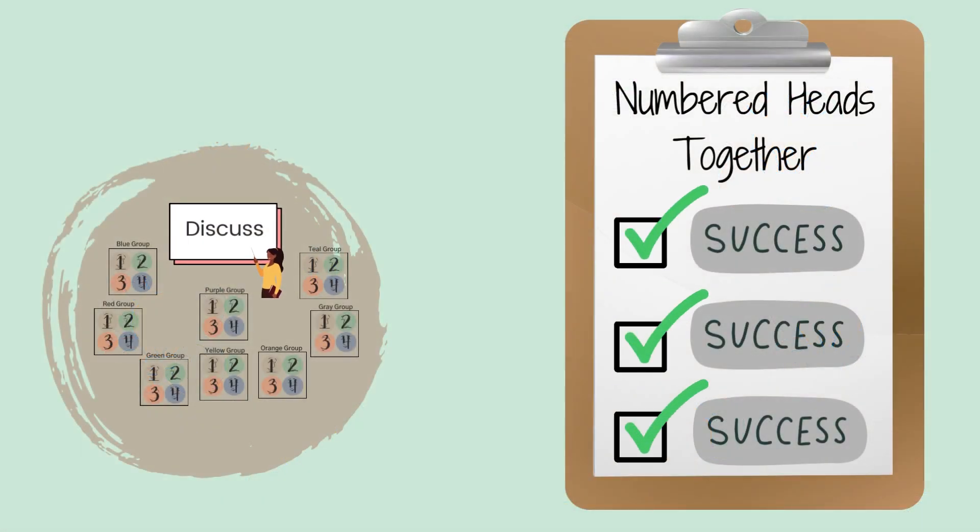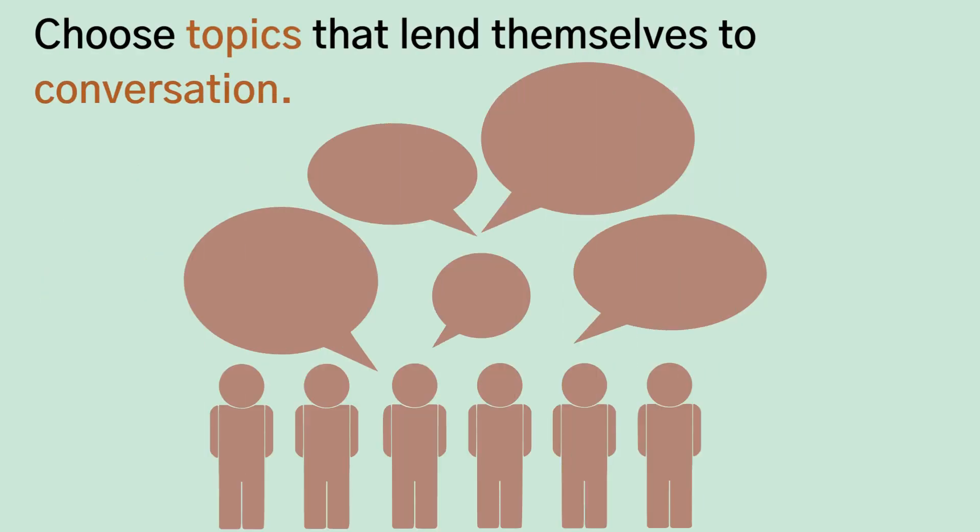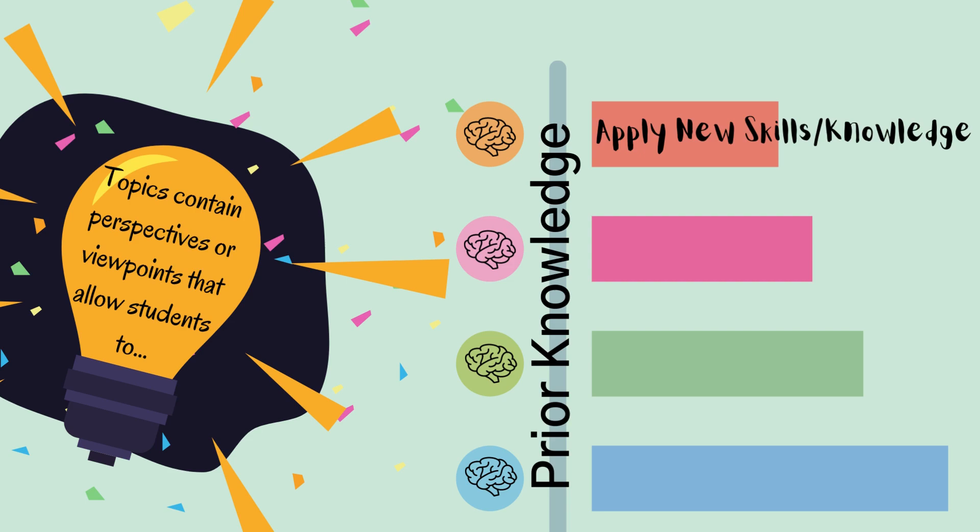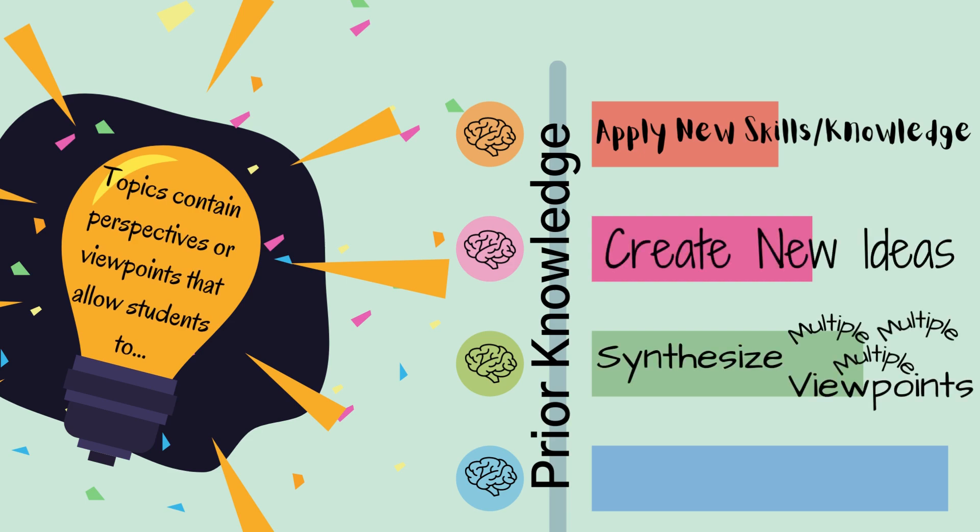Now let's go into detail about how to effectively use the Numbered Heads Together strategy. The strategy works best for lesson topics that lend themselves to good conversations. The topic should contain perspectives or viewpoints that allow students to access prior knowledge, apply new skills and knowledge, create new ideas, synthesize multiple viewpoints, and evaluate claims.